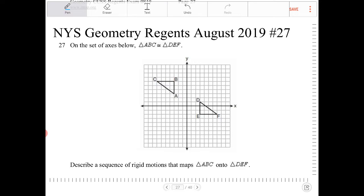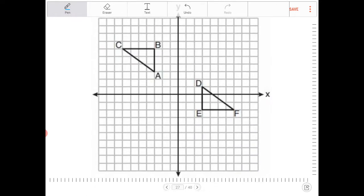So for questions like these where you have free will to perform any kind of rigid motion you like, there's no one absolute way of doing it. What I'm about to propose is not going to be the only way. As long as you're able to map ABC onto DEF, then you've accomplished the goal of the problem.